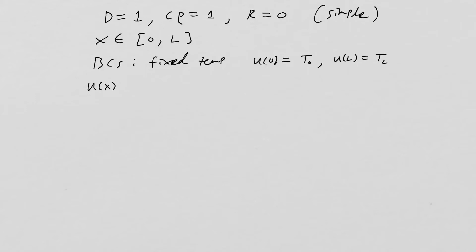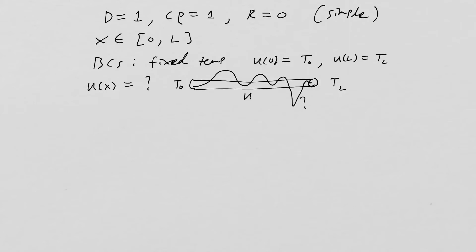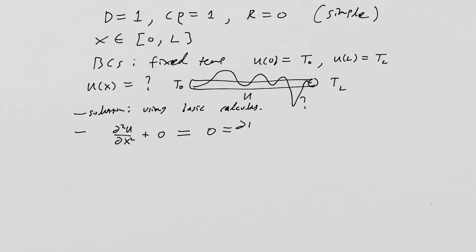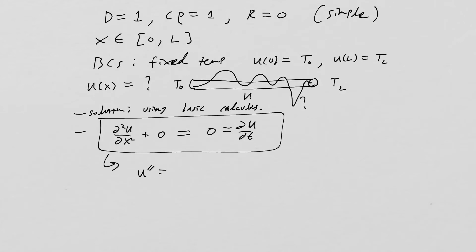The question is: what does u(x) look like — what is the temperature distribution through the rod given temperature T₀ on one side and T_L on the other? Will it go up and down, or do something strange? The differential equation reduces to u double prime equals zero.